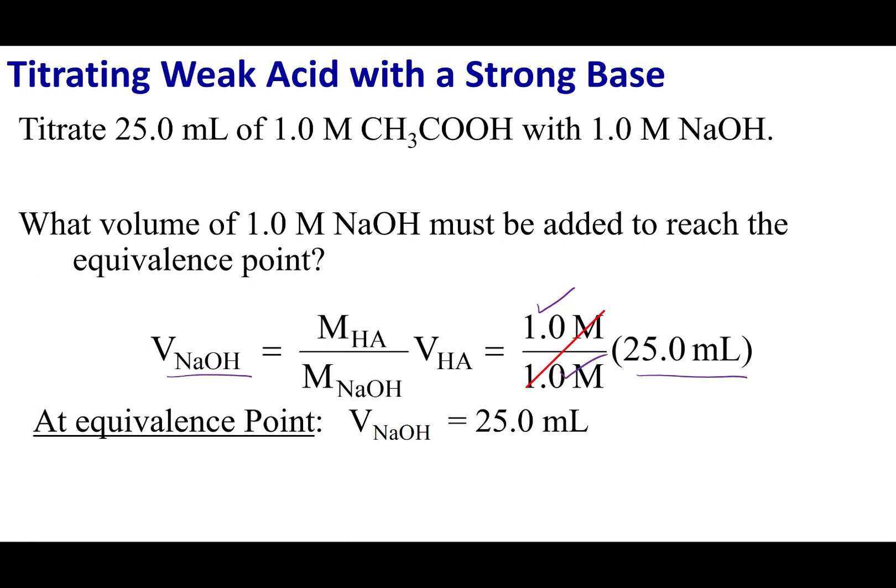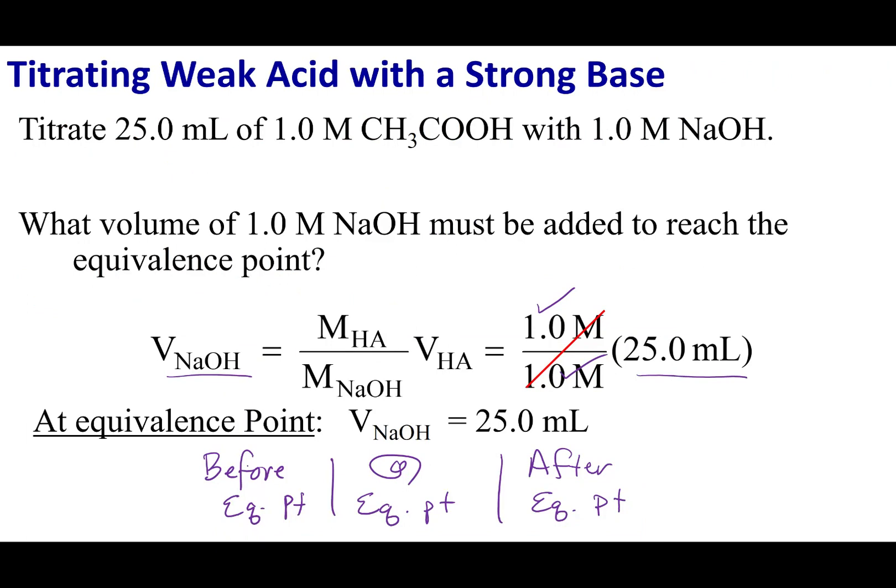With the equivalence point identified, there are three different places in your titration curve, and the way you solve for pH is slightly different at each one: before the equivalence point, at the equivalence point, and after the equivalence point. Once you've identified the equivalence point, you can tell which scenario you're in and then use the appropriate methodology to solve for pH.